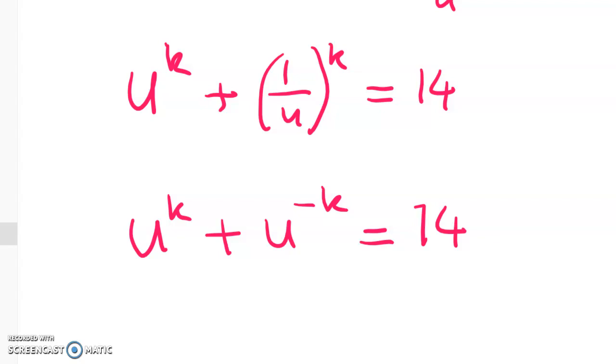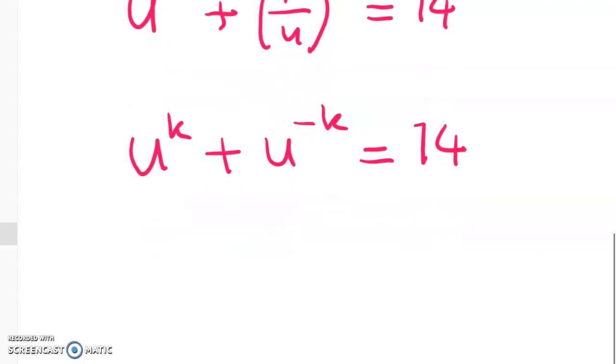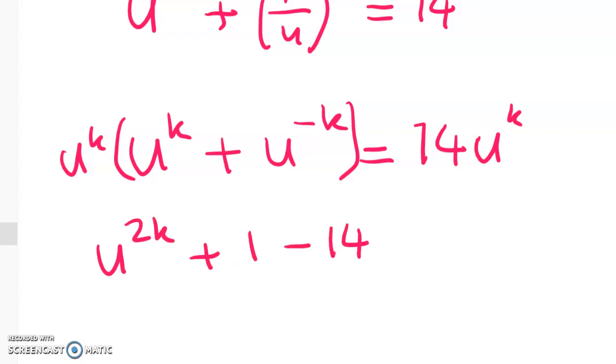Hopefully at this point you're going to spot that this is a disguised quadratic. So nearly everything in scholarship calculus algebra comes down to a quadratic somewhere along the line. I'm going to multiply all of those terms through by u to the power of k. So I get u to the power of 2k plus 1 minus 14 u to the power of k is equal to 0.